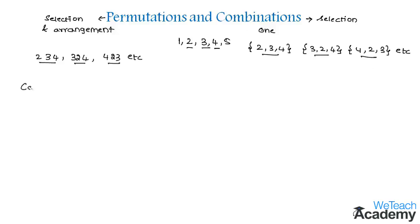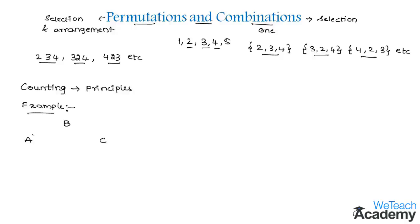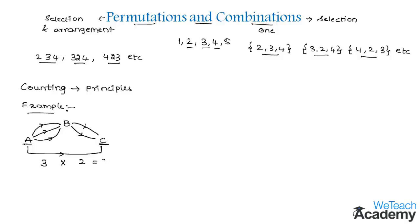Permutations and combinations is essentially about counting, and we follow certain fundamental principles of counting. Consider A, B, C as three different places. In how many ways can we travel from A to C? We have three different ways to travel from A to B, and two ways to travel from B to C. By multiplying, we get 3 times 2 equals 6. So there are six different ways to travel from A to C.